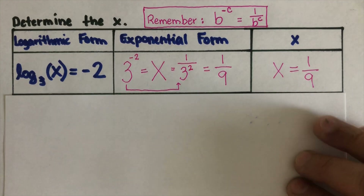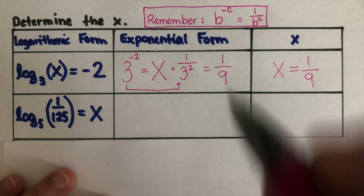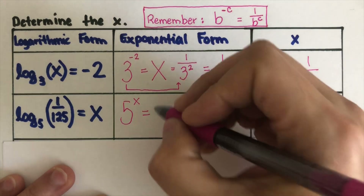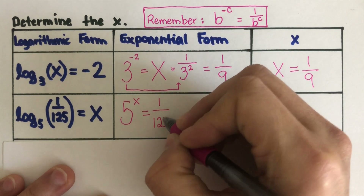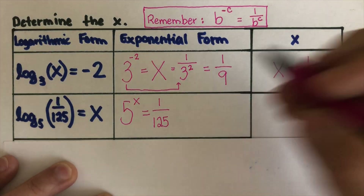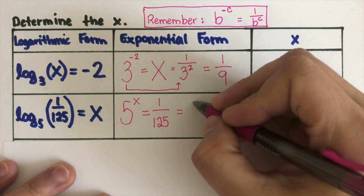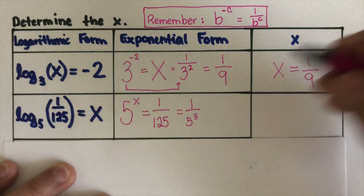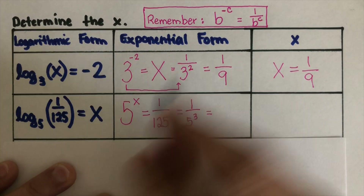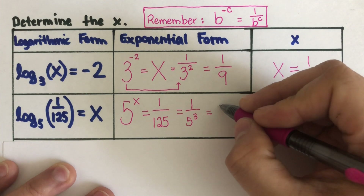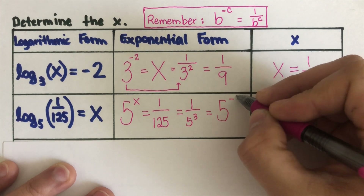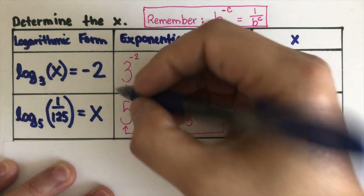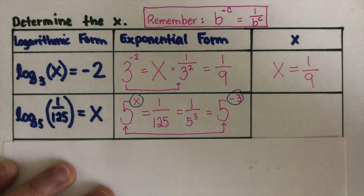Now, let's move on to the second example. Changing this using the negative exponent rule, this matches up as 5 to the negative 3. These two are a match, which means that since the bases are the same, our x is negative 3.